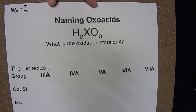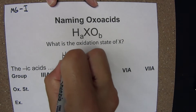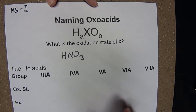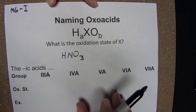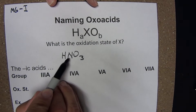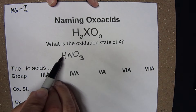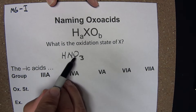Let's look at an example of an oxoacid. This is nitric acid. To know that this was nitric acid, I need to know that the oxidation state of that nitrogen right there is plus 5. Hydrogen in these oxoacids will always have an oxidation state of plus 1.